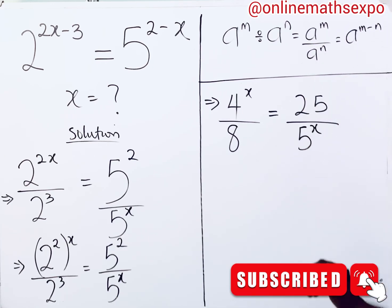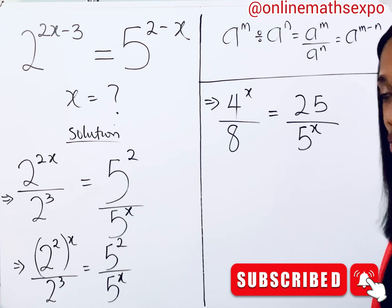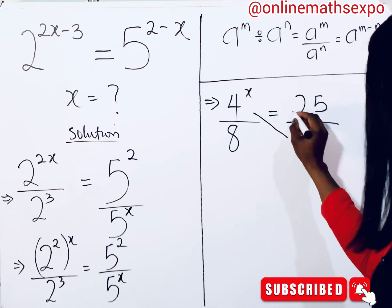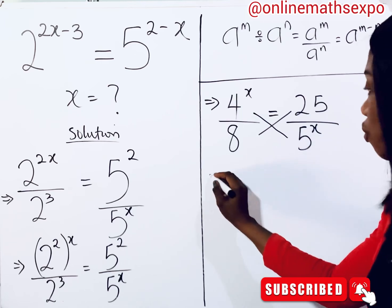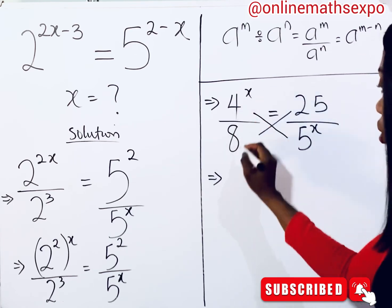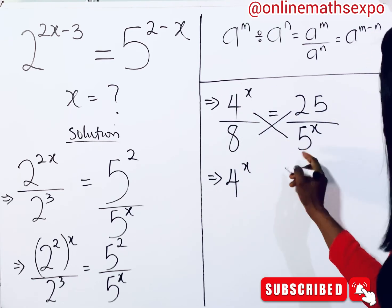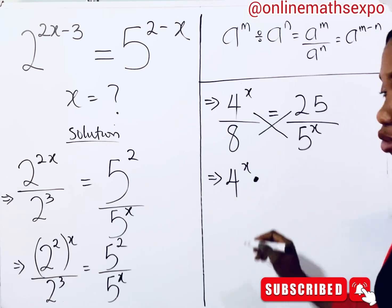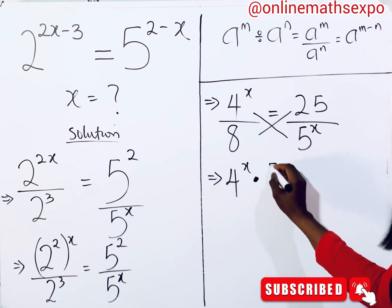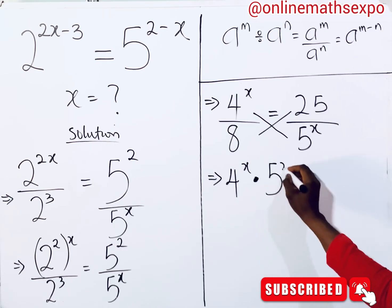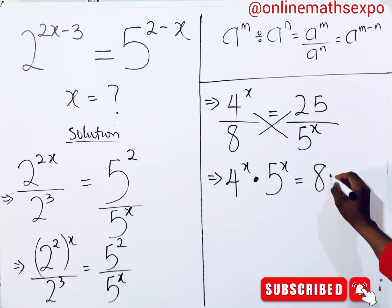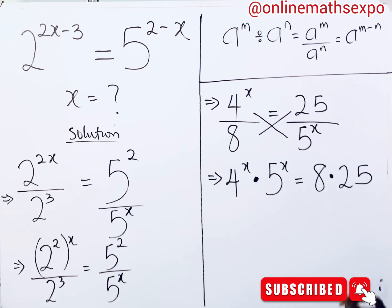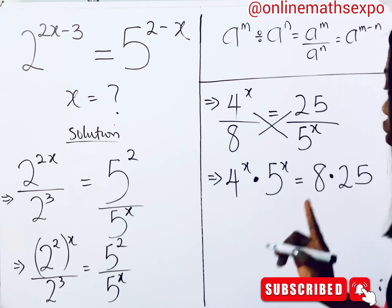At this point we cross multiply. This gives us 4 to the power of x multiplied by 5 to the power of x, which is equal to 25 multiplied by 8.